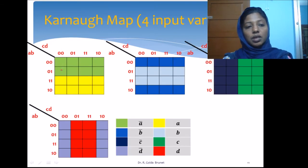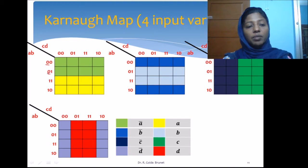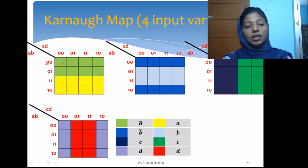This slide shows how we can group the cells together. When we group these 8 cells together, what is the term that we get? When we consider the row, only A is remaining constant. It is taking the value 0, so it is A-bar. When you consider the column, all the variable values are varying, so all those terms will be cancelled. These 8 cells together forming a block gives us A-bar.